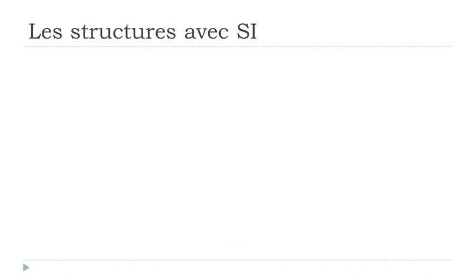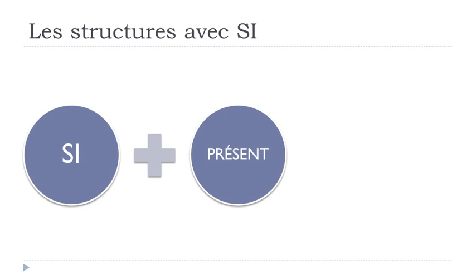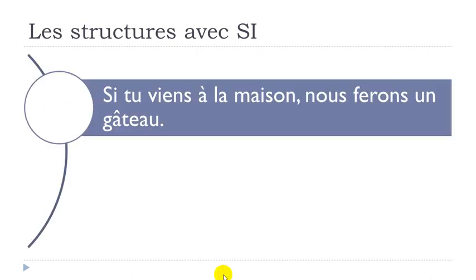If we want to express POSSIBILITÉ, the first option is SI constructed with the présent, followed by LE FUTUR. For example: SI TU VIENS À LA MAISON — VENIR is to come, À LA MAISON is at home — NOUS FERONS UN GÂTEAU. FERONS is the future form of FAIRE. So we will make a cake. SI TU VIENS À LA MAISON, NOUS FERONS UN GÂTEAU.